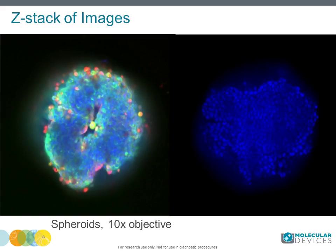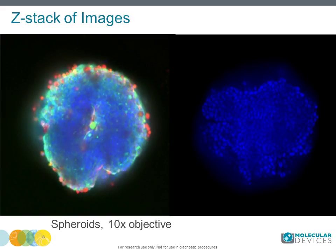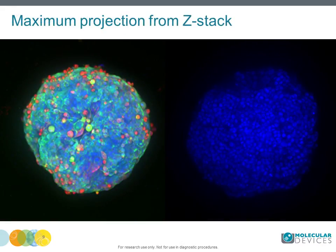The imaging system can effectively capture spheroids in a single image using a 10x objective. At 10x magnification, you can capture 10–15 images with 10-micron distance, or more than 20 images with 5-micron distance. Images can be analyzed individually in 3D mode, or this stack of images can be compressed into a 2D image using maximum projection.